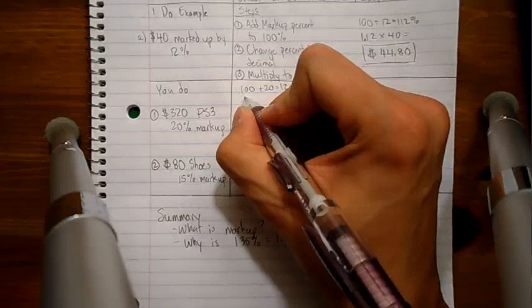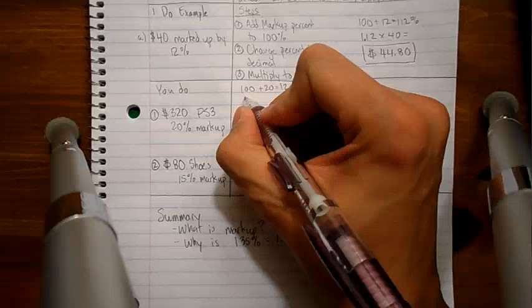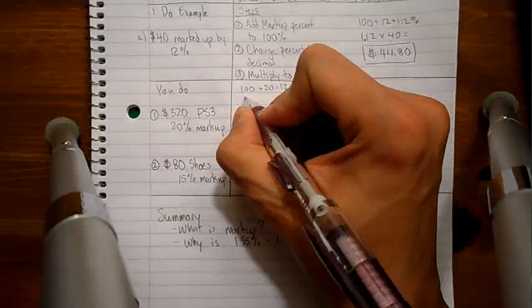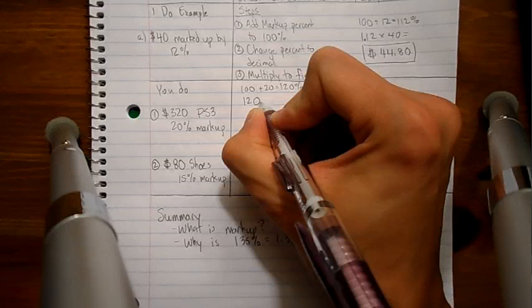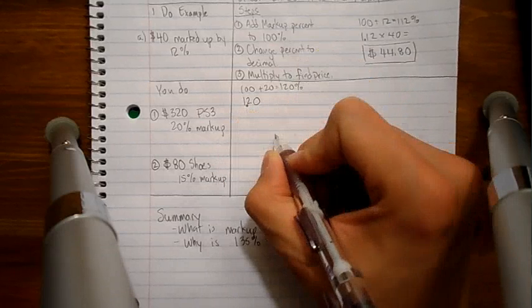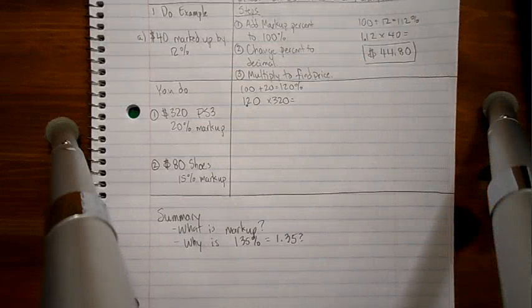See if you can actually beat me. Pause the video. What is 120% as a decimal? Did you pause the video? Are you doing the work? Awesome! I know that some people got it. And you should too. It is 120, move the decimal two places, 1.2. I'm going to multiply times the original price which is 320.